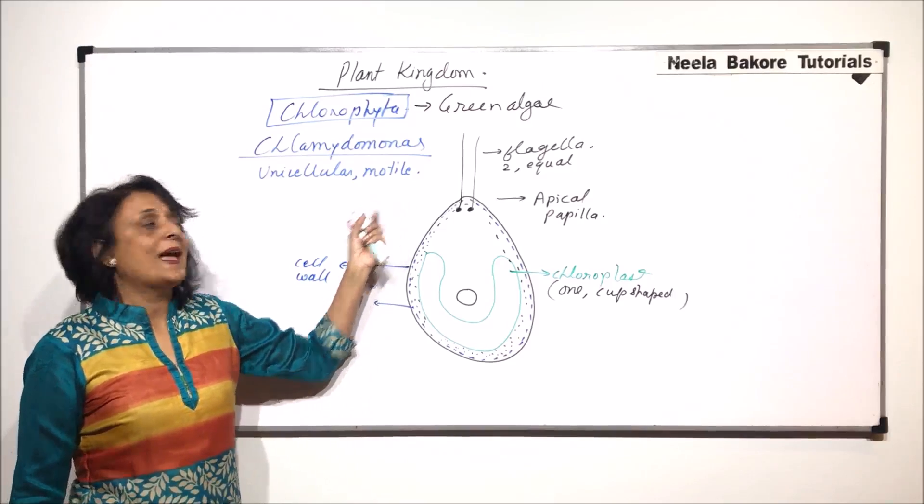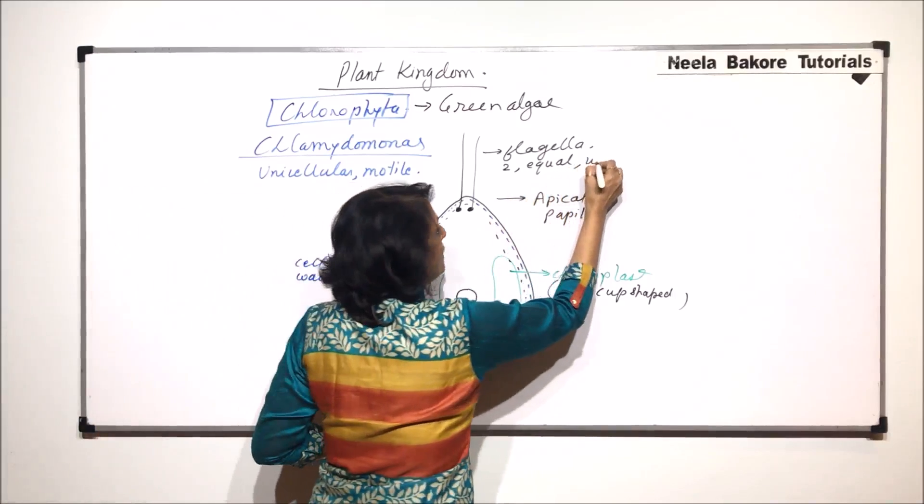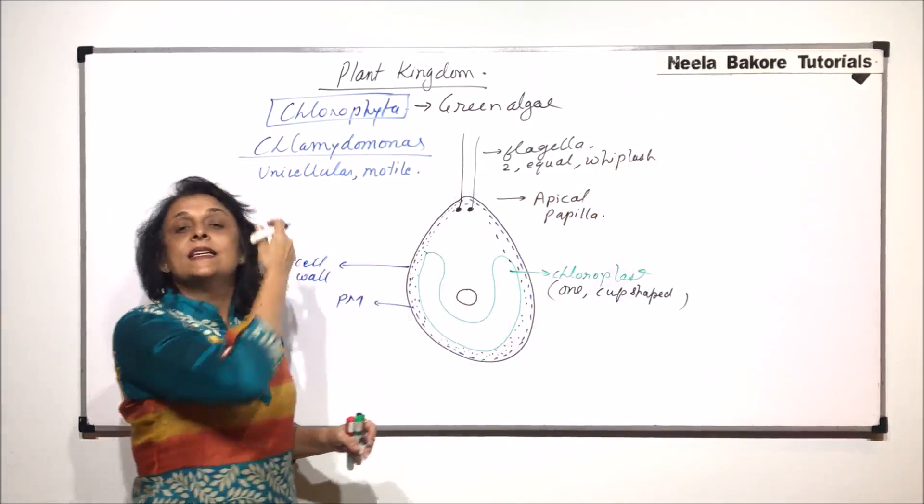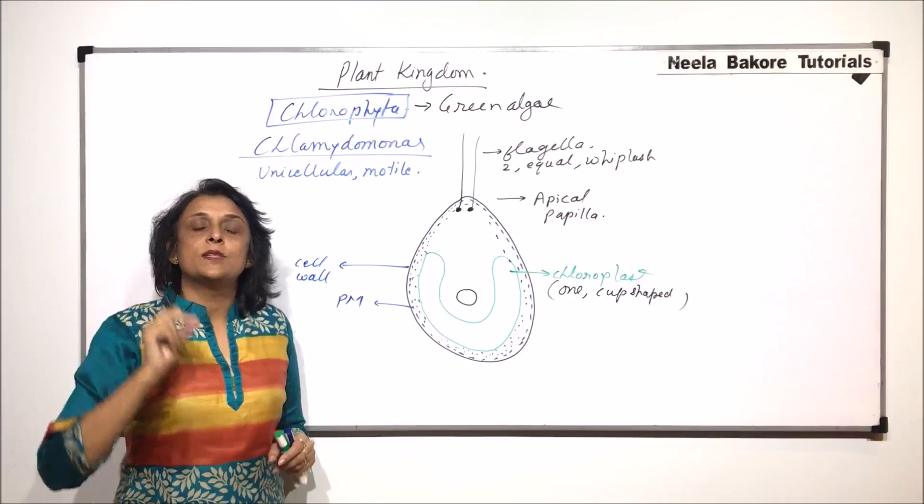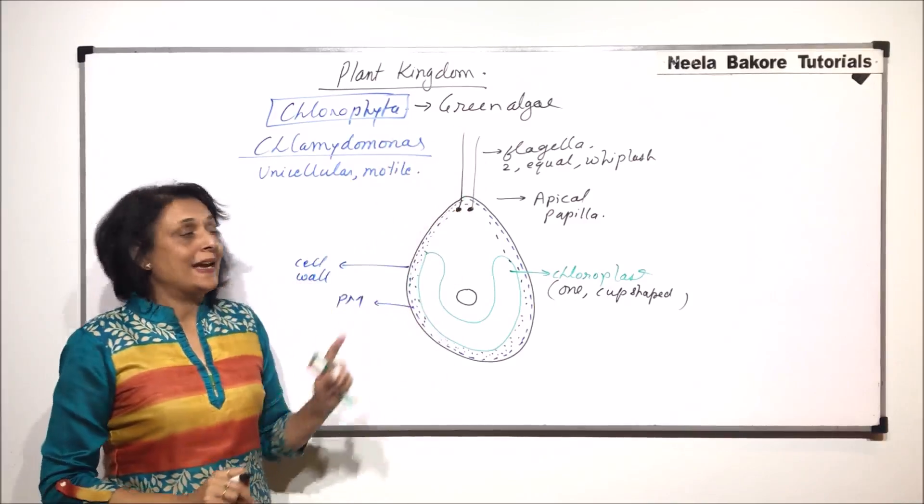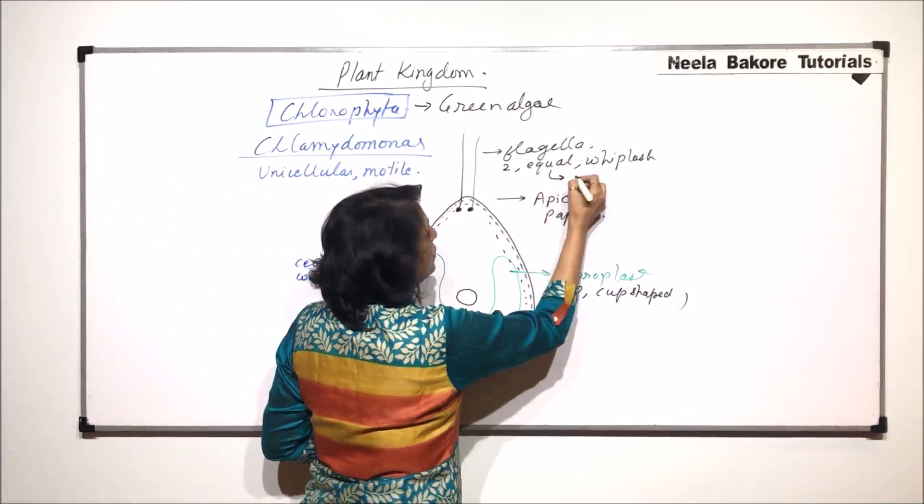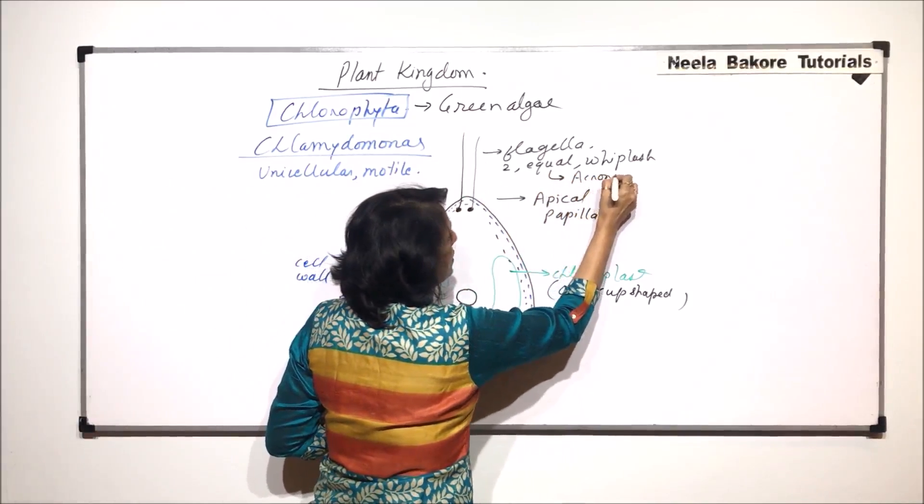They are whiplash type. Whiplash means the base is slightly broader and it becomes tapering or pointy towards the end. For equal we use the word acronematic.